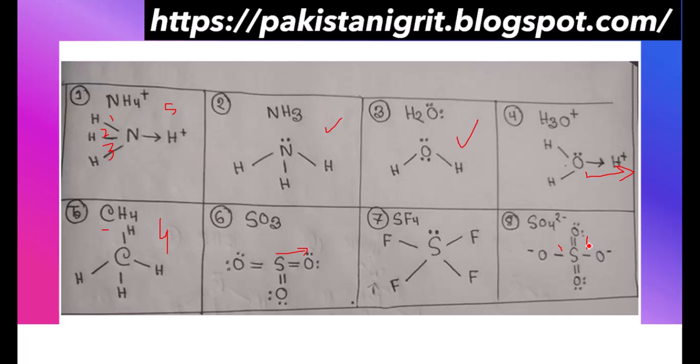In the case of SO4 2−, there are two sigma bonds and donation of two lone pairs to the respective oxygens, so the hybridization will be sp3.